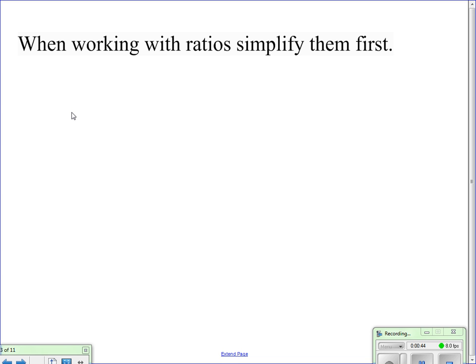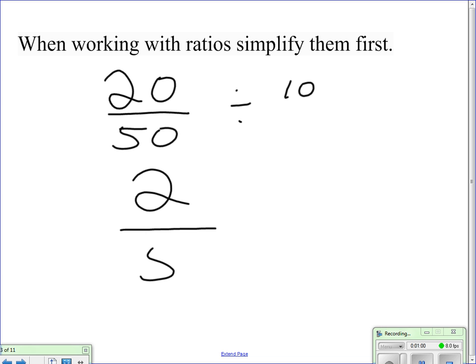When working with ratios, it's very important to simplify them first. So, going back to our 20 to 50 example, both of these numbers are divisible by 10. And so, when I divide 10 into both of those numbers, I get the simplified ratio of 2 out of 5. In order to simplify, it's very important to find a common number that's divisible by both, but there may be some trial and error.